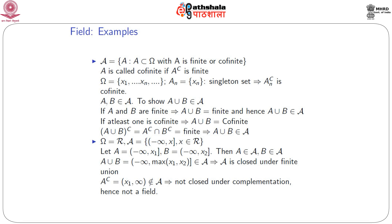Consider a class script A as the collection of all sets A that are subsets of omega, where A is either finite or co-finite. A set is called co-finite if its complement is finite. For example, if omega = {x₁, x₂, ..., xₙ, ...} and Aₙ is the singleton {xₙ}, then Aₙᶜ is co-finite because Aₙ is finite.